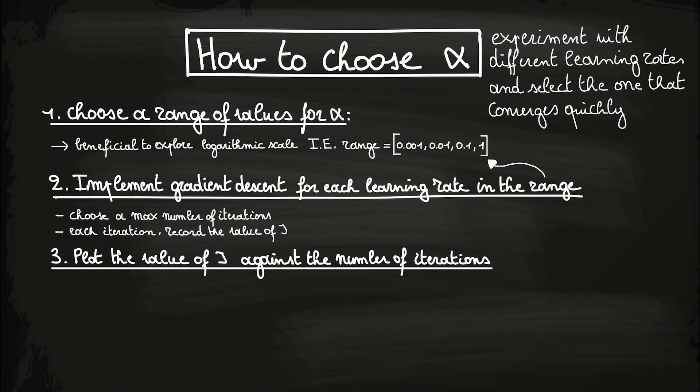Concretely for our range of values, we get four plots, one for each learning rate in the range that we defined. They might look as follows.